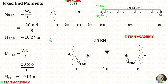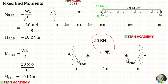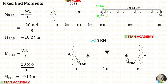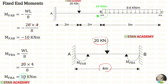Now let us find the fixed end moments. First let us find them in span AB. In span AB there is a point load of 20 kilo Newton acting at the center. The formulas to find the fixed end moments are minus WL upon 8 and positive WL upon 8. Here W is 20 and L is 4. When we apply the values inside the formulas we get M of AB and M of BA.